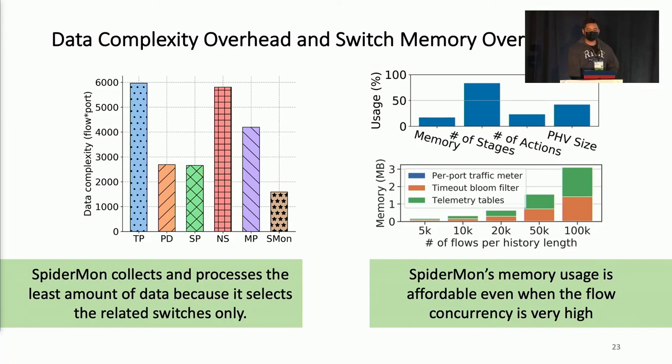As for switch memory overhead, because Spider-Man uses probabilistic data structures, in order to maintain high precision, the more flows we have, the more memory we need to capture this information. But we show that even with very relatively high flow concurrency, the switch memory usage is still affordable.